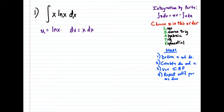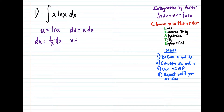Now from here we're going to calculate du. So we have du is equal to 1 over x dx. And v would be the antiderivative of dv, and the antiderivative of x is one half x squared.